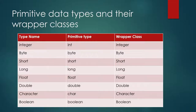Recall from the last video, we have eight primitive types. Each has an individual wrapper class associated with them. For this video, we will talk about the first four: integer, byte, short, and long. All four of these represent integer numbers.